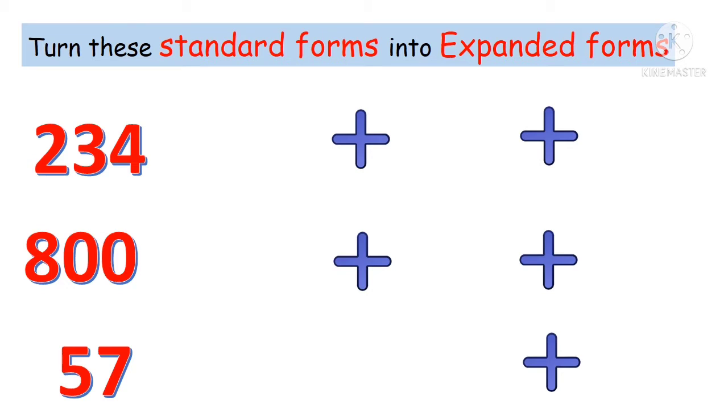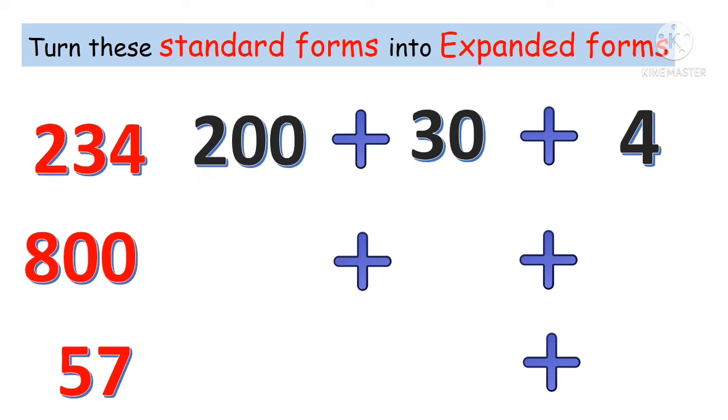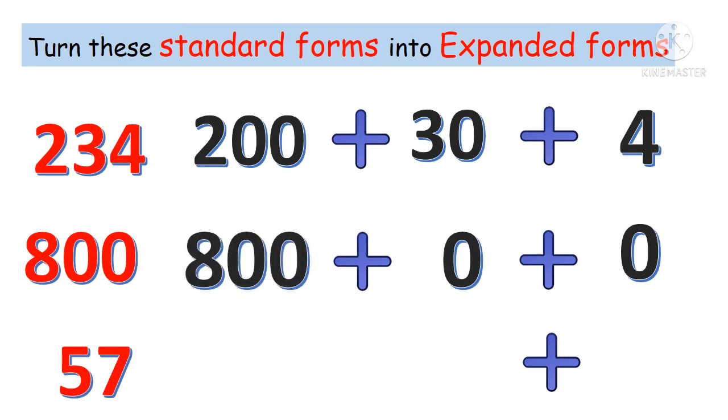Turn these standard forms into expanded forms. What about 800? The 1's is 0, the 10's is 0, and 8 times 100 is 800. Excellent.